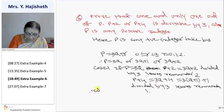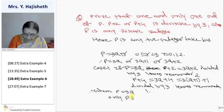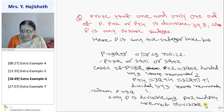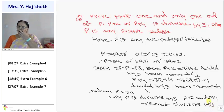So in case 1, when p is 3q, only p is divisible by 3. P plus 2 and p plus 4 are not divisible by 3. That is what we want to prove. Out of p, p plus 2, and p plus 4, only p is divisible by 3.